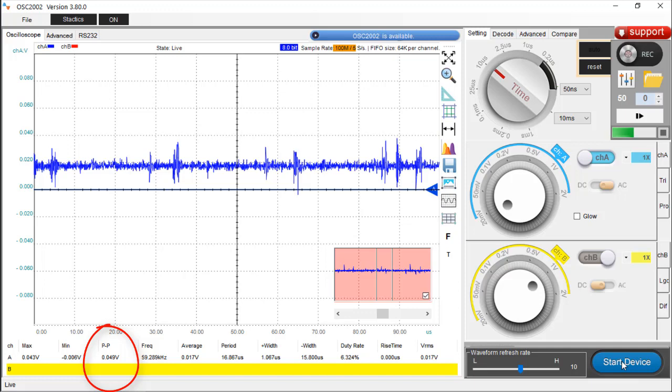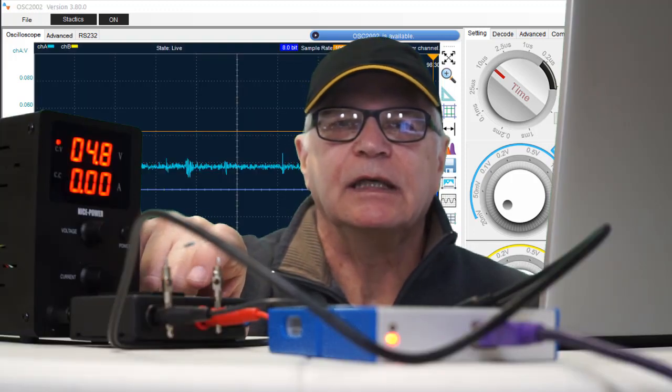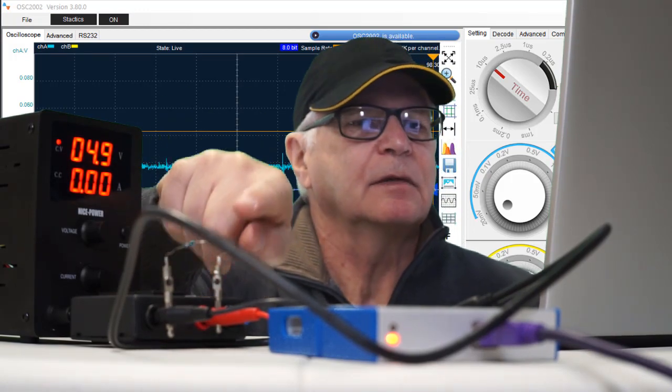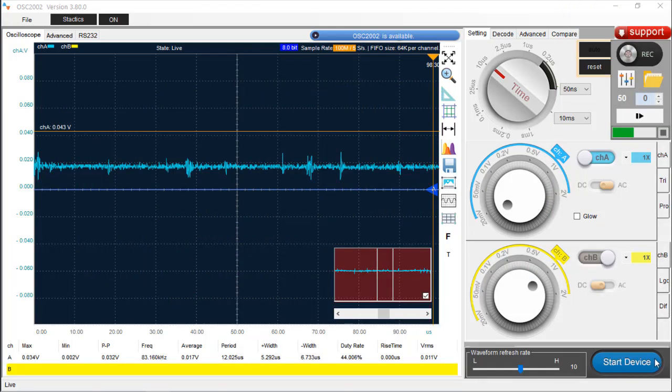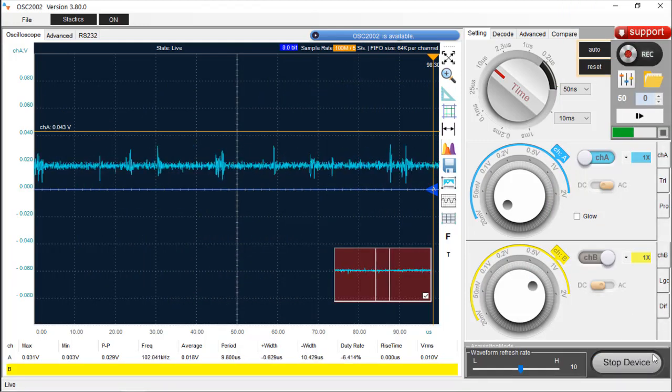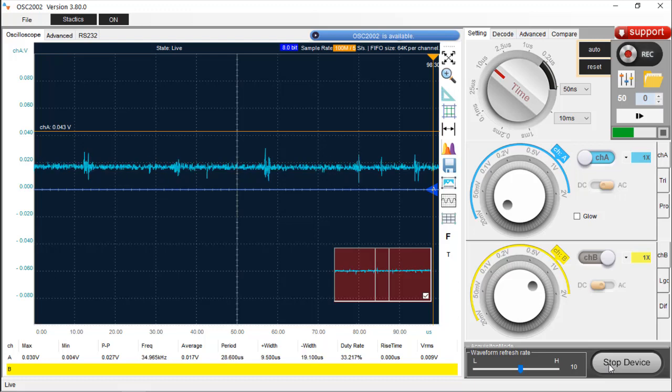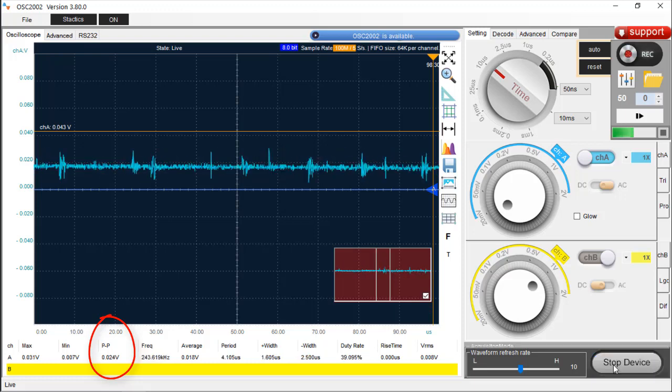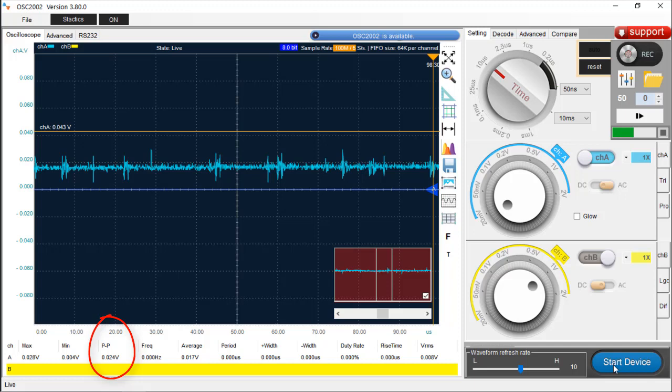Now with the LM317 linear module, same 3.3 volts across 100 ohm resistor, same settings on the Loto oscilloscope software. We'll pause it at the bottom, peak to peak I'm getting 27 millivolts. Pause it again, 28 millivolts. We'll pause that again, 24 millivolts. Let's call it 25.